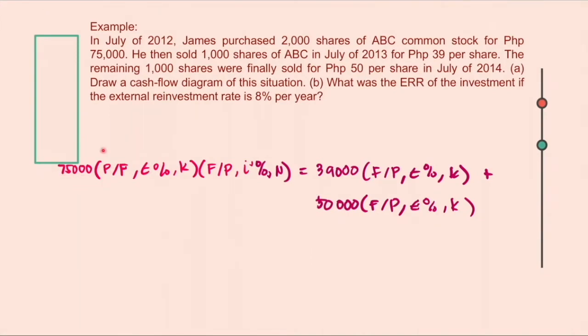And this value will be expressed as a future amount given the present value at i' percent. This i' prime is the ERR for a certain number of terms, which is 2 in this problem.